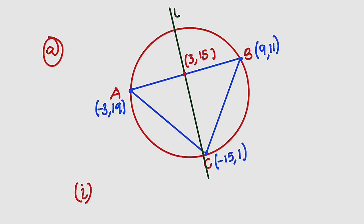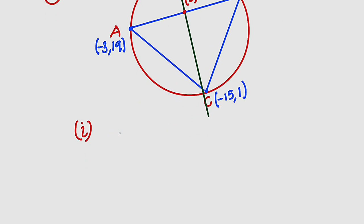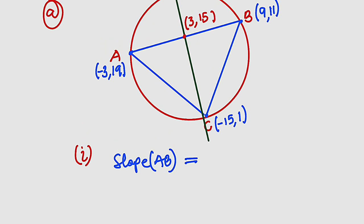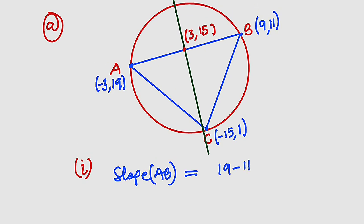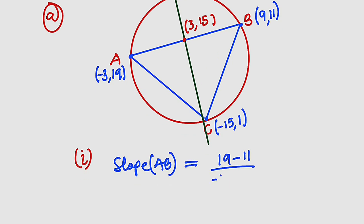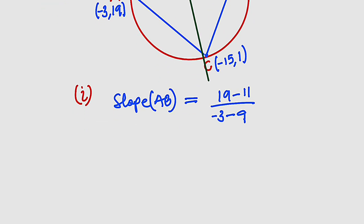Secondly, we need to find the slope of line AB. The slope of line AB equals (y2 - y1) / (x2 - x1). Starting from A: (19 - 11) / (-3 - 9) = 8 / -12. Reducing to lowest terms, 4 divides 8 twice and divides 12 three times, so the slope of AB is -2/3.